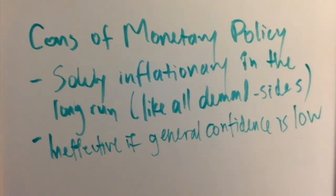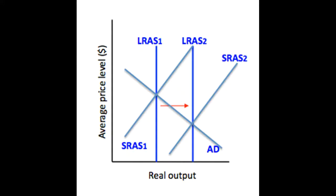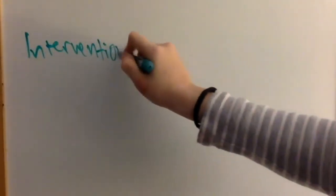Supply-side policies are aimed at increasing the long-run aggregate supply, which is influenced by the quantity and quality of the factors of production. There are two major types: interventionist, where the government directly wades in, and market-based, where the government provides stimulation — like it gives the situation a shove. It's important to keep in mind that for many supply-side policies, AD will also shift along with AS, and for a lot of situations we will be shifting the long-run aggregate supply, which results in the snowflake diagram with everything shifting outwards.